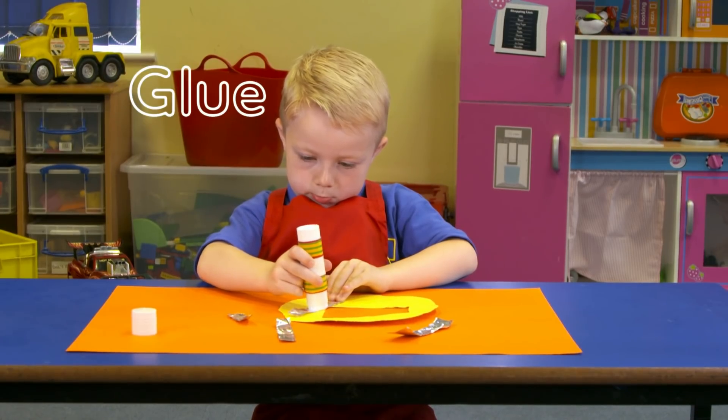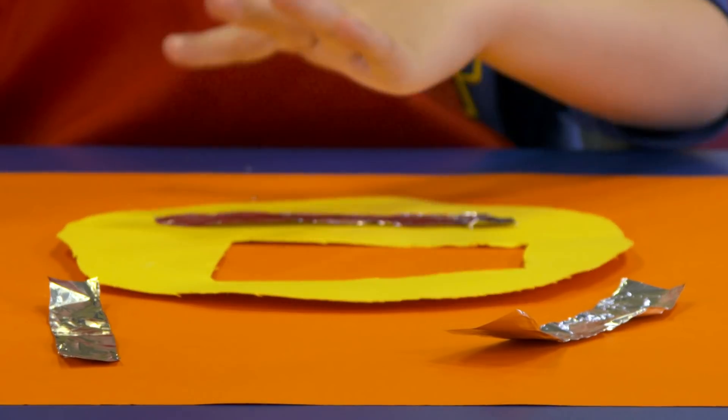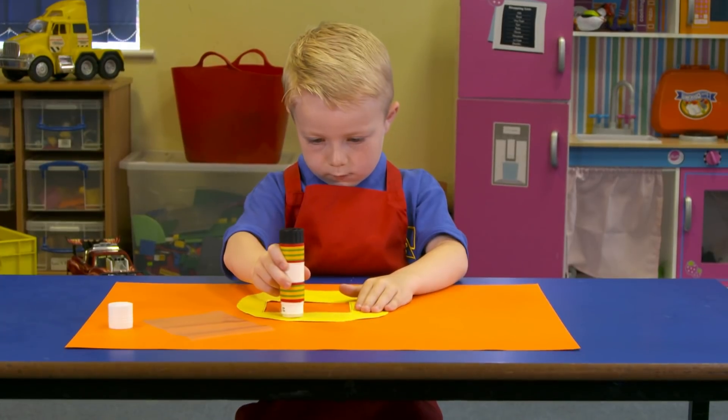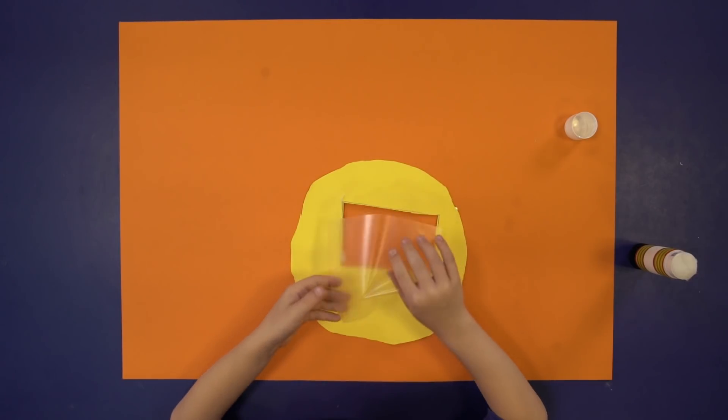Glue strips of tinfoil to the helmet. And glue a plastic sheet on the back to cover the visor hole.